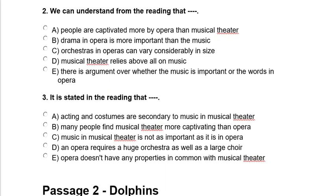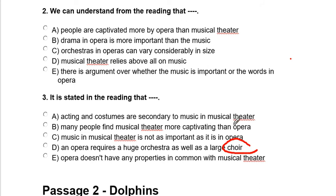Question 3: 'It is stated in the reading that...' Option A: acting and costumes are secondary to music in musical theater. Option B: many people find musical theater more captivating than opera. Option C: music in musical theater is not as important as it is in opera. Option D: opera requires a huge orchestra as well as a large choir — choir meaning chorus. Among all these options, the one already given in the passage is option C — music in musical theater is not as important as it is in opera.